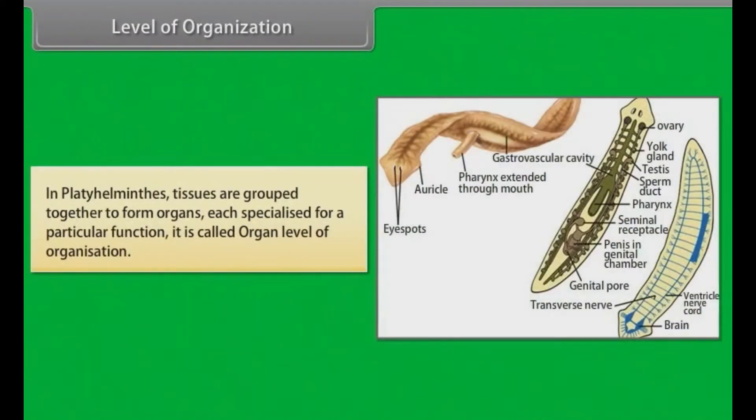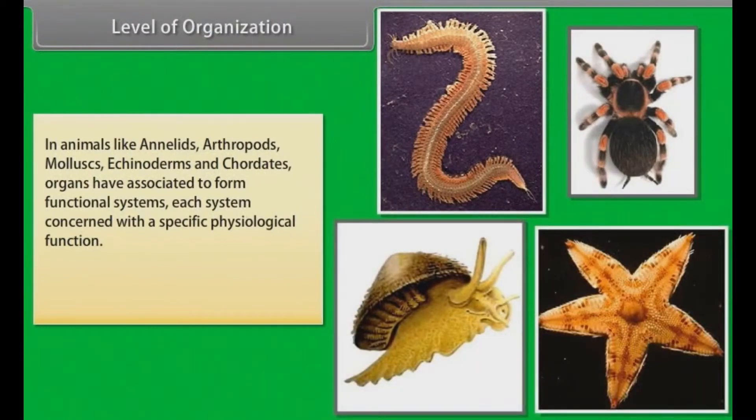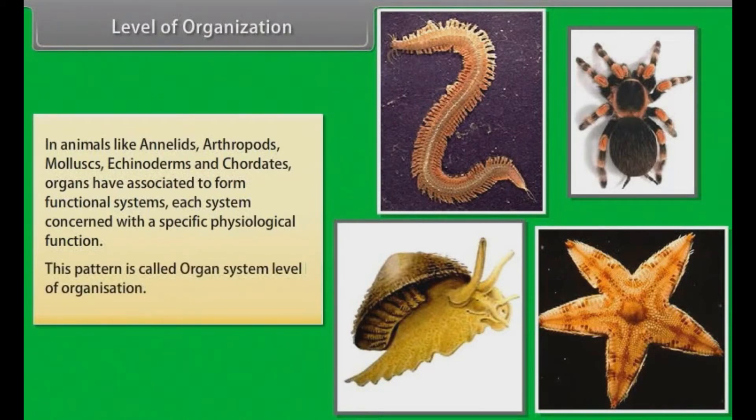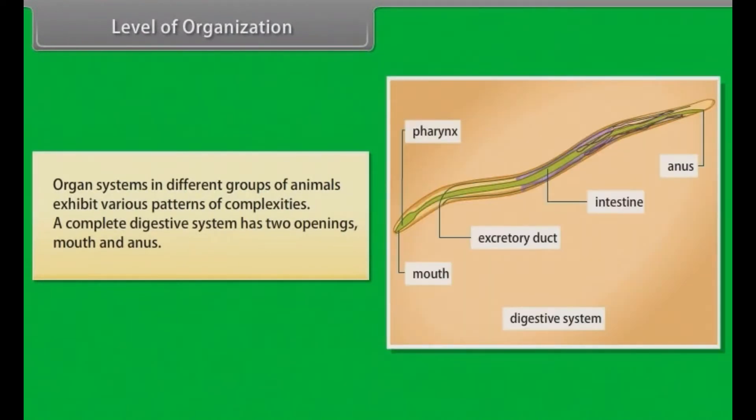In platyhelminthes, tissues are grouped together to form organs, each specialized for a particular function. It is called organ level of organization. In animals like annelids, arthropods, molluscs, echinoderms and chordates, organs have associated to form functional systems. Each system is concerned with a specific physiological function. This pattern is called organ system level of organization. Organ systems in different groups of animals exhibit various patterns of complexities.